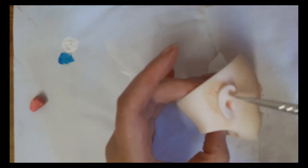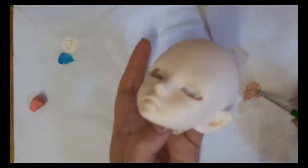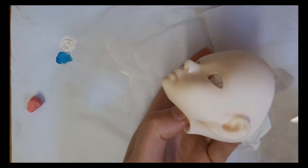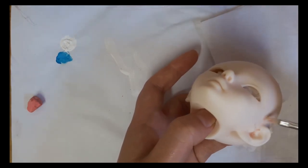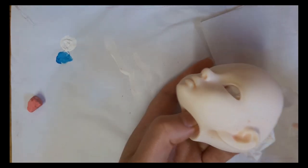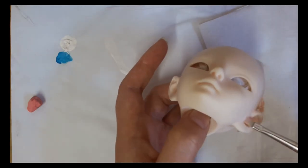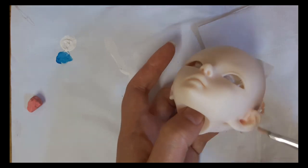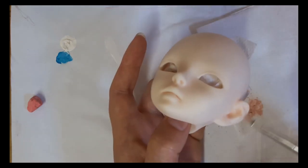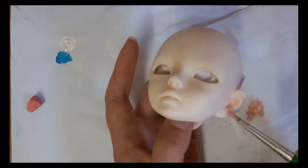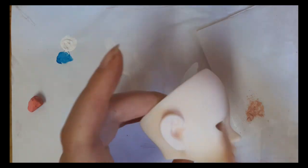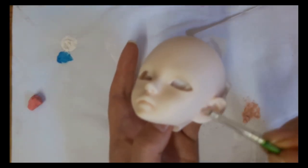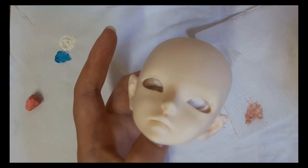Around the nose, around the eyes, around the ears, forehead - pretty much anywhere there would be a natural shadow. I'm also being very careful because this doll's head is very pale, so if I add too much blushing then the doll's head would just completely change color and not fit their body.